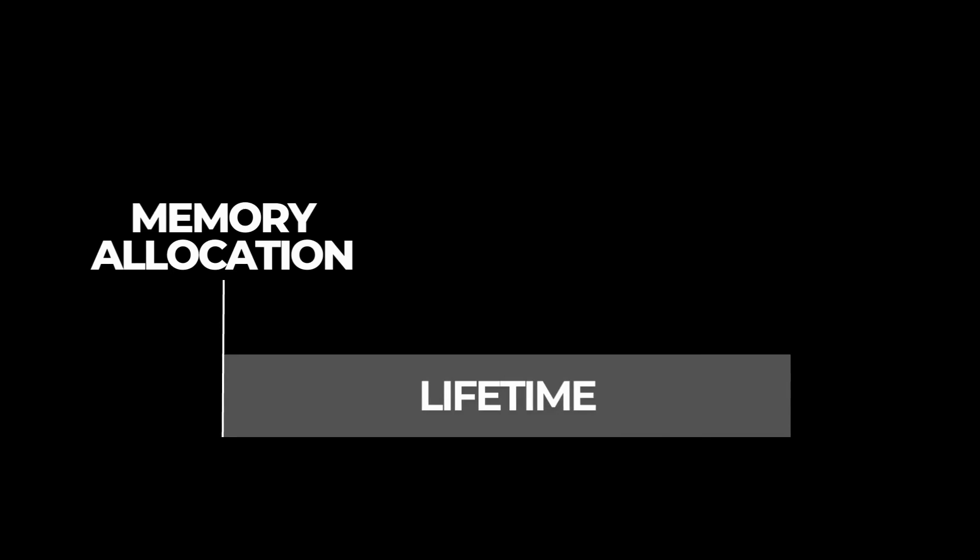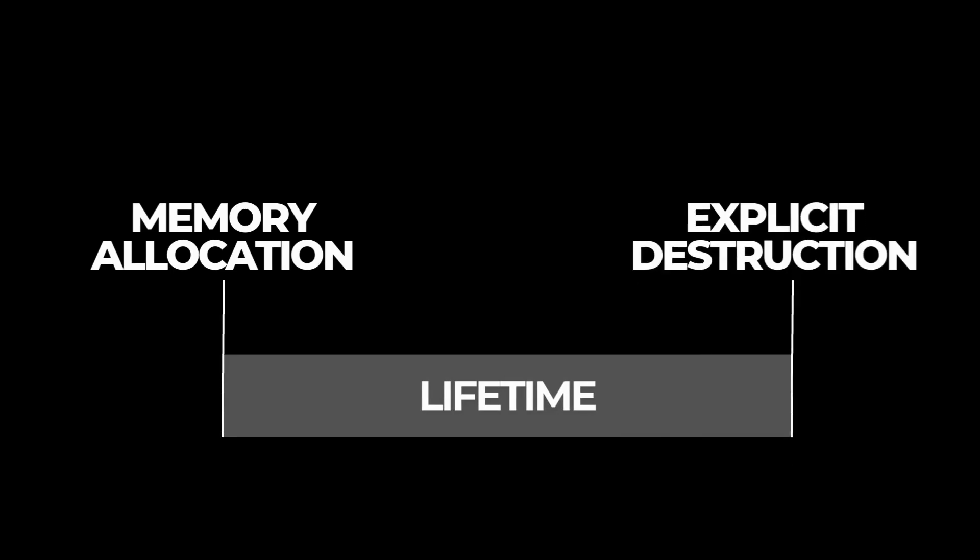The first step in learning smart pointers is to understand the general idea behind them. Let's look into the lifetime of an object allocated on the heap. Its lifetime begins with explicit memory allocation and constructor invocation, and finishes with explicit destruction via delete. And it's a problem, because forgetting to deallocate the memory explicitly leads to memory leaks. However, C++ has another type of object managed automatically by the C++ runtime.